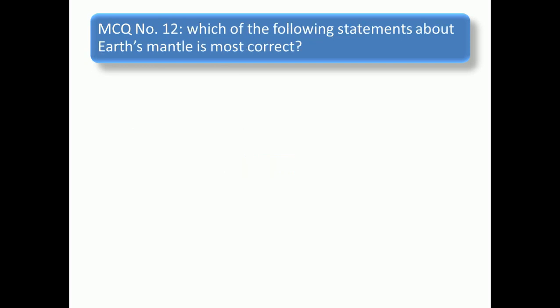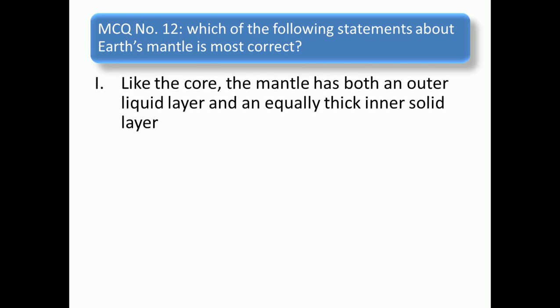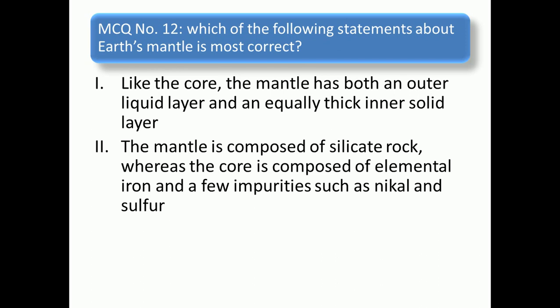Which of the following statements about Earth's mantle is most correct? Like the core, the mantle has both an outer liquid layer and an inner solid layer. The mantle is composed of silicate rock whereas the core is composed of elemental iron and a few impurities such as nickel and silver. Both 1 and 2, or none of them. So the right answer is number 2.